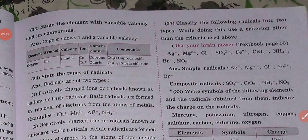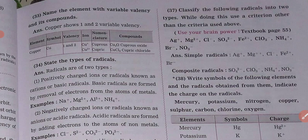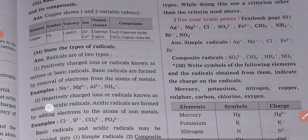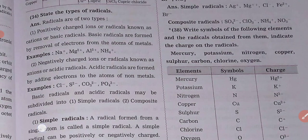So your next question is, students, name the element with variable valency and its compounds. And on the right-hand side, the question is, classify the following radicals into two types. While doing this, use a criterion other than the critical criteria used above. So according to your question, you have to write the answer here.